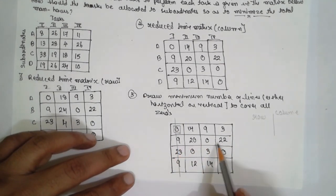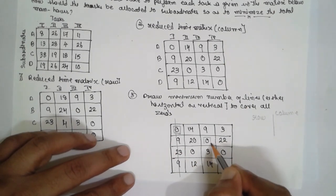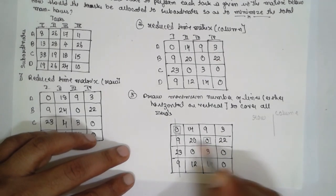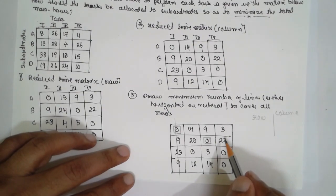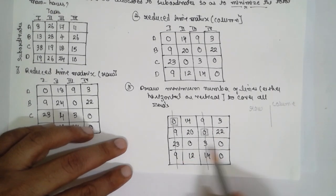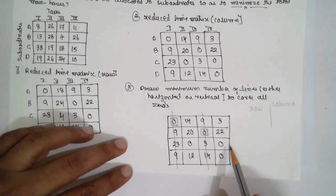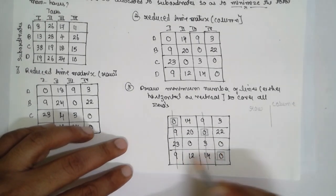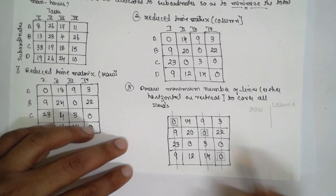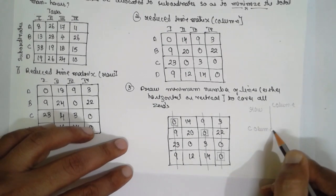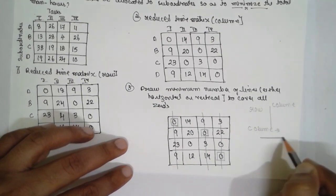After assigning the single zero in row A (column 1) and eliminating that column, move to the second row. There is a single zero in row B — assign it and eliminate the column. In the third row there are two zeros, so skip for now. In the fourth row there is a single zero — assign it and eliminate the column. After completing rows, check columns and eliminate rows for any remaining assigned zeros.